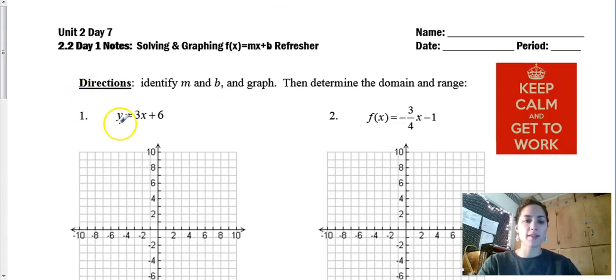So right away I see I have y equals mx plus b. I'm going to label this m and this b. And just to make sure I'm super clear off to the side I'm going to write m equals 3 divided by 1 because that's what 3 would be as a fraction and b equals 6.